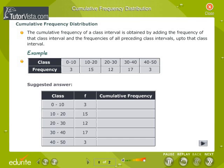Cumulative Frequency Distribution. The cumulative frequency of a class interval is obtained by adding the frequency of that class interval and the frequencies of all preceding class intervals up to that class interval.